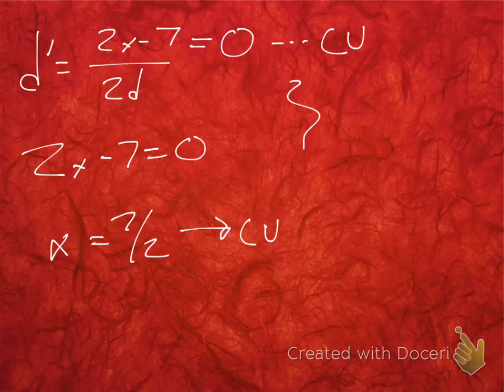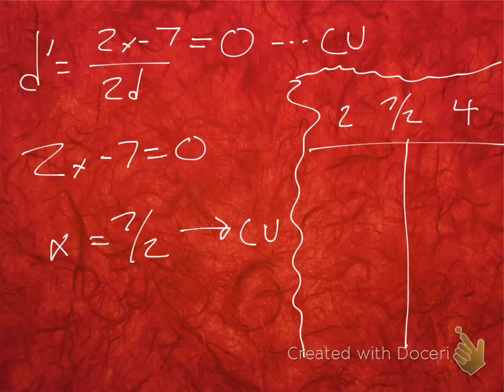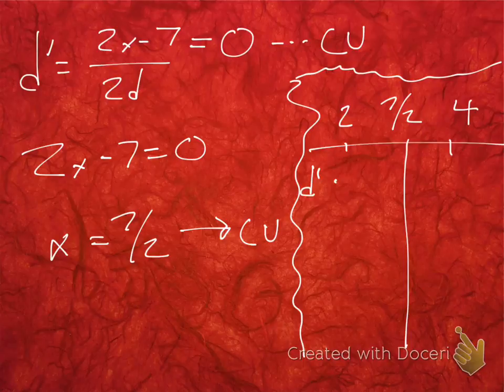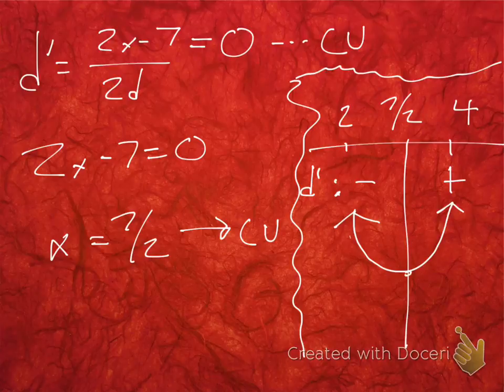Let's go ahead and make a little sign chart over here and say 7/2, 2, 4, and over here we have d', right? So, what's d' going to be for 2? Well, it's going to be negative, right? What's d' going to be for 4? Well, it's going to be positive. So, looking at our graph, it would look like this, right? At that point, theoretically, for purposes of concavity. So, this is going to be a minimum.